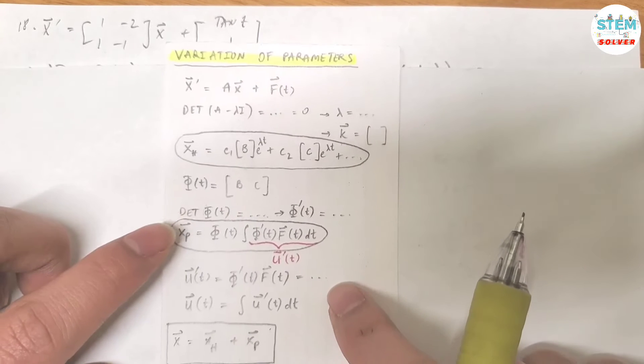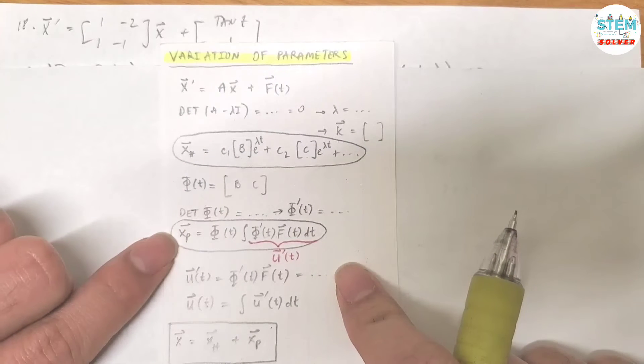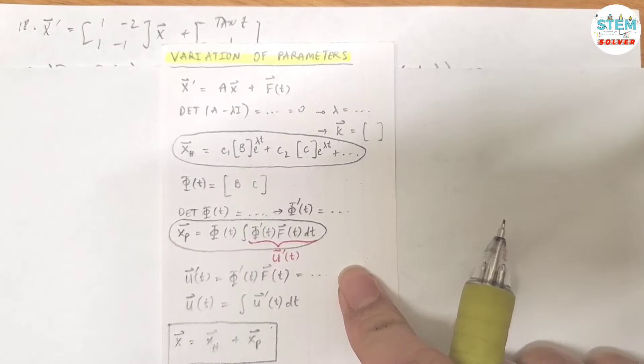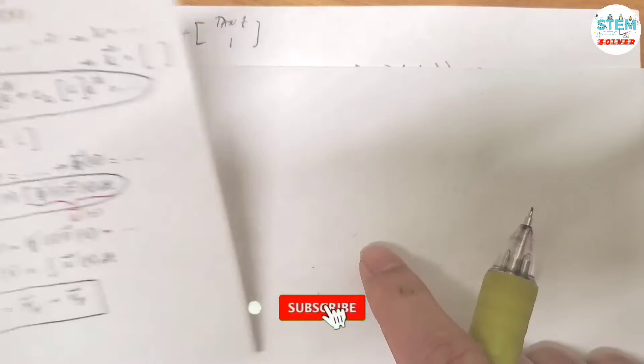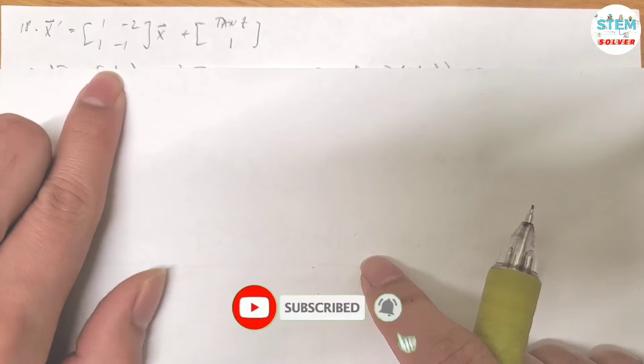Use variational parameters to solve the given system. To use the parameters method, here's the steps. First, find the homogeneous part, then find the non-homogeneous part and add them together. That gives you the final answer. So here's the guideline and I will walk you through it step by step when we work with a specific problem.